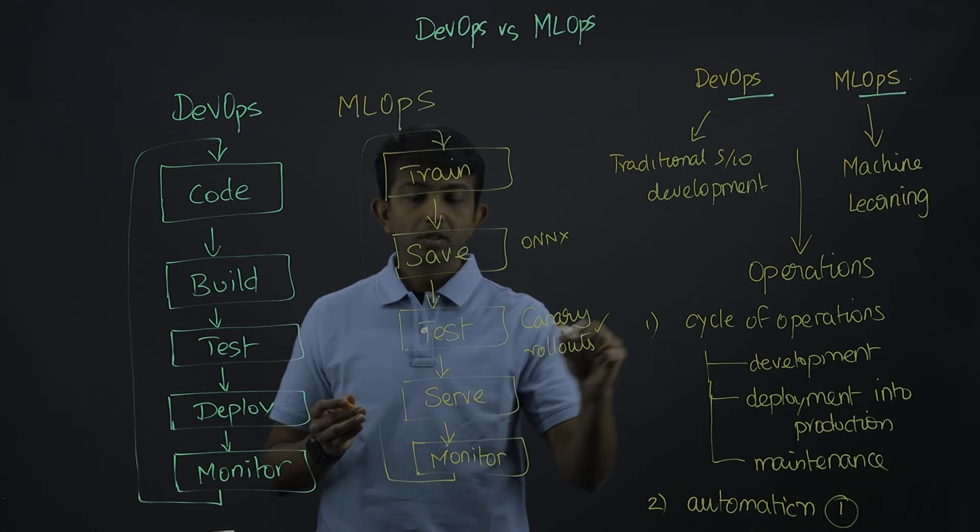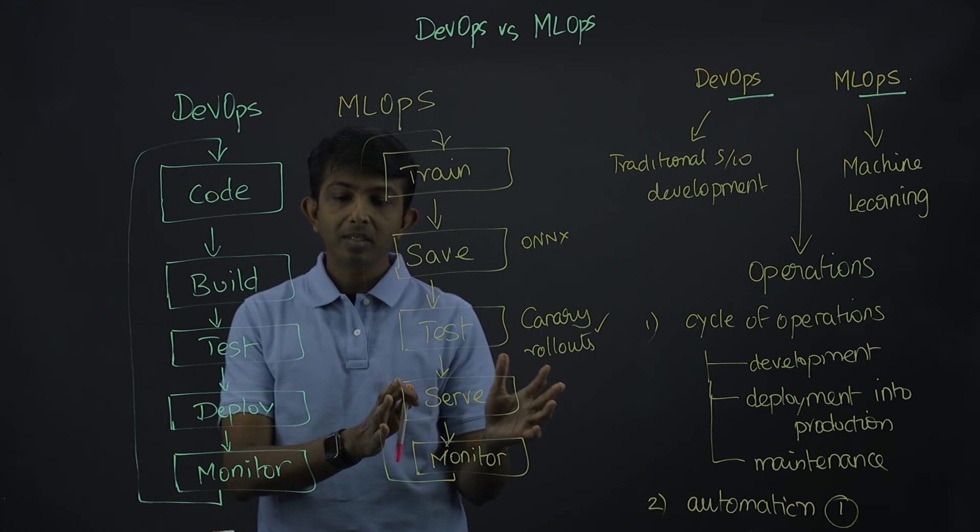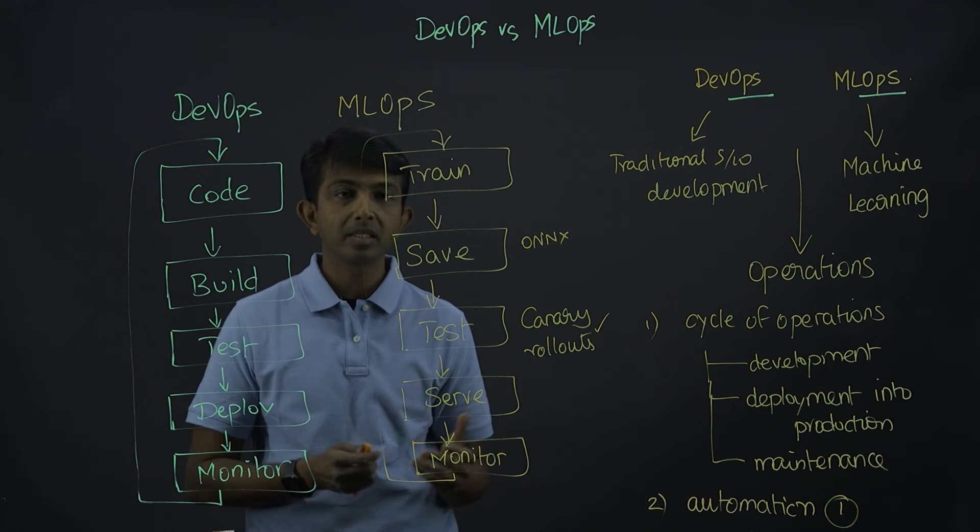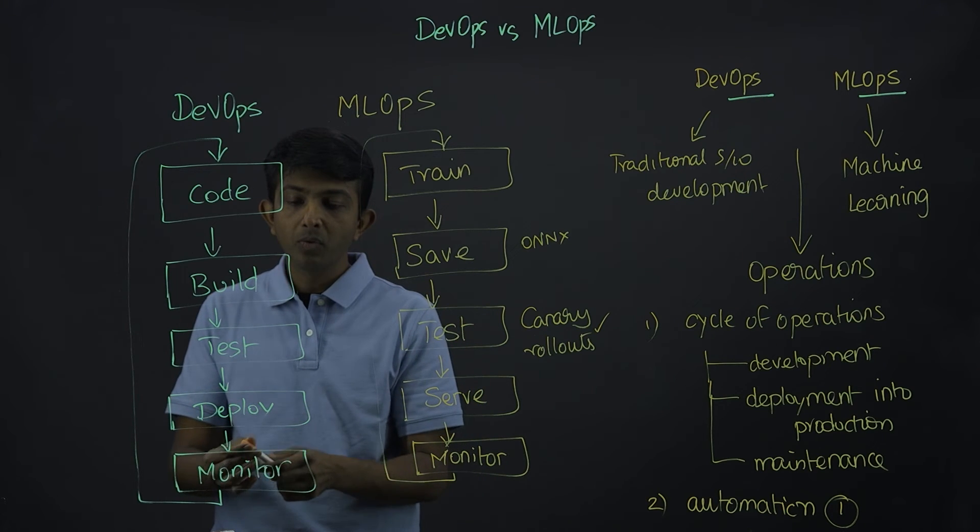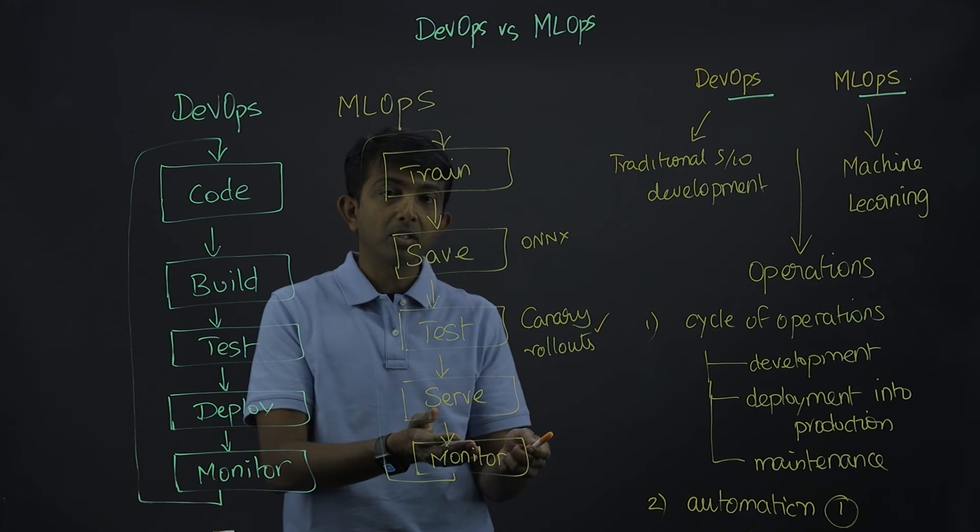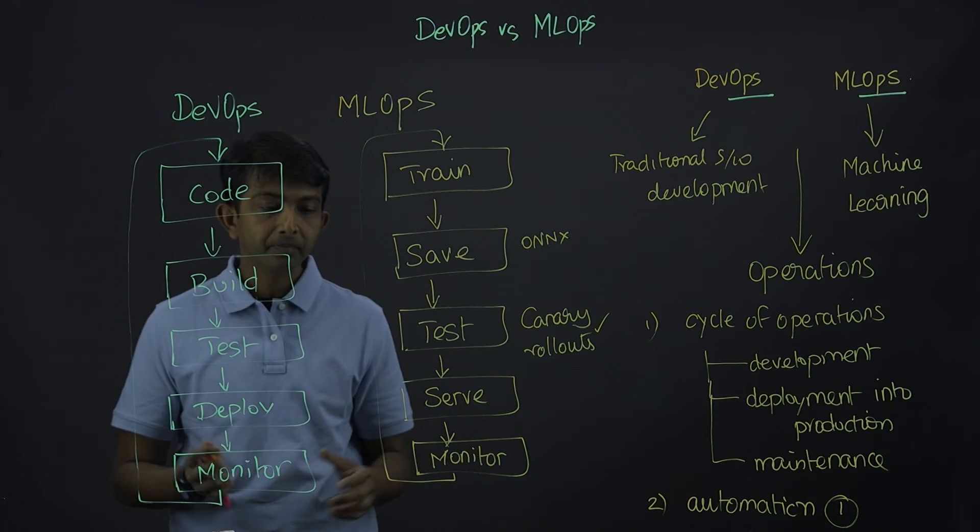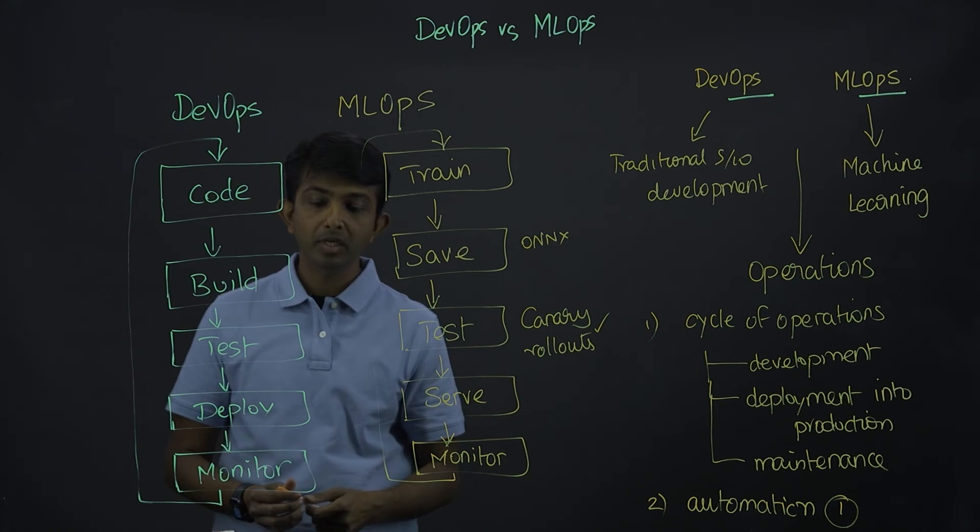Once everything goes fine, you actually serve the model, which basically means you are deploying the model into production. Just how you deploy the software application into production, you are serving the machine learning model into production. In both of these, we have the application in production now.